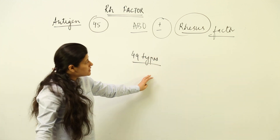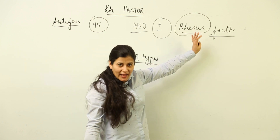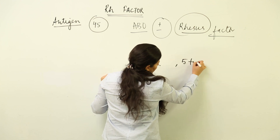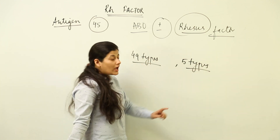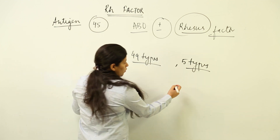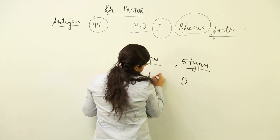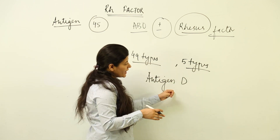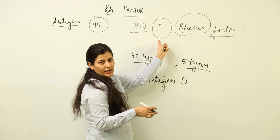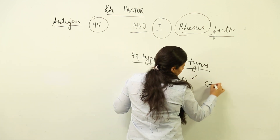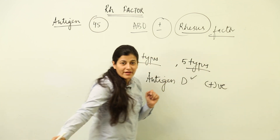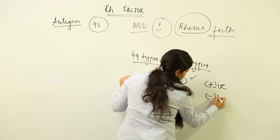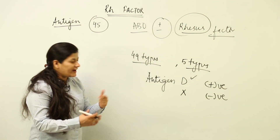The Rhesus blood grouping deals with 49 types of antigens. On the basis of these 49 types of antigens, this Rhesus blood grouping is carried out. Out of these 49 types, 5 types of antigens are of prime importance. Out of these 5 types, one antigen — Antigen D — whether present or not present, decides if it is going to be positive or negative.